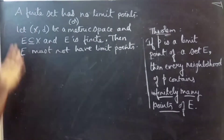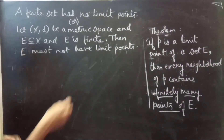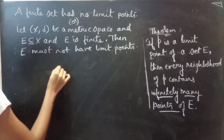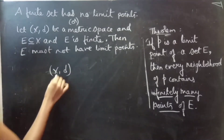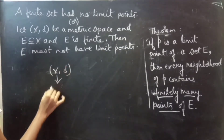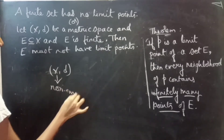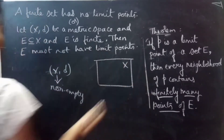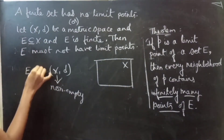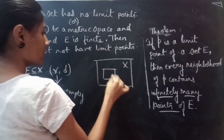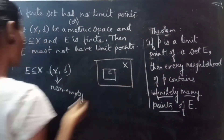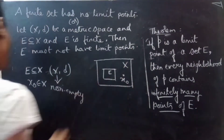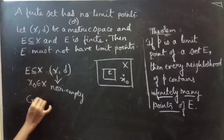Before going to the proof, let's see what a limit point is. Let (X, d) be a metric space, where capital X is a non-empty set and E is a subset of X. Let X-naught belong to capital X.